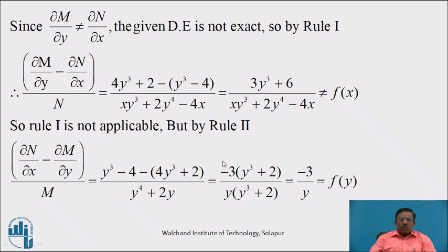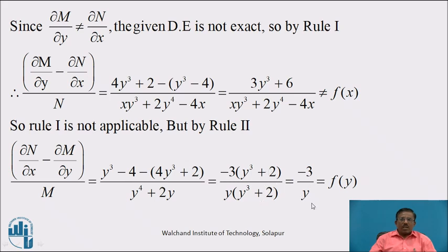By Rule 2, we find (∂N/∂x - ∂M/∂y) / M, which equals (y³ - 4 - (4y³ + 2)) / (y⁴ + 2y), which equals (-3y³ - 6) / (y(y³ + 2)). Taking -3 common from the numerator, we get -3(y³ + 2) / (y(y³ + 2)). The (y³ + 2) terms cancel, giving -3/y, which is a function of y, denoted f(y).